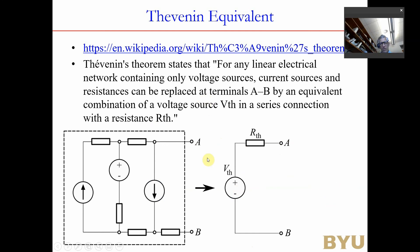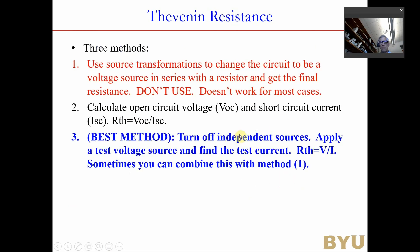Now let's look at Thevenin equivalent. We can take any linear circuit and reduce it to a Thevenin voltage (the open-circuit voltage) in series with a Thevenin resistance. There are three methods: the first transforms all sources — voltage sources add up, current sources add up — but it only works in limited cases. The second finds the open-circuit voltage and short-circuit current; it always works but can be awkward when combined with superposition.